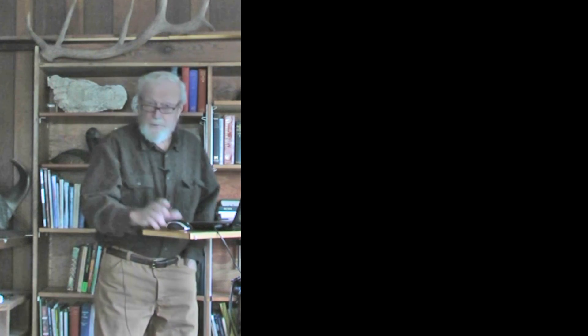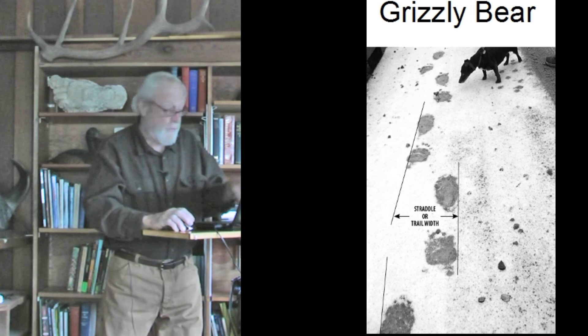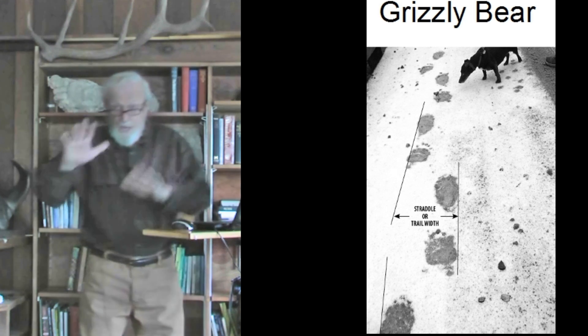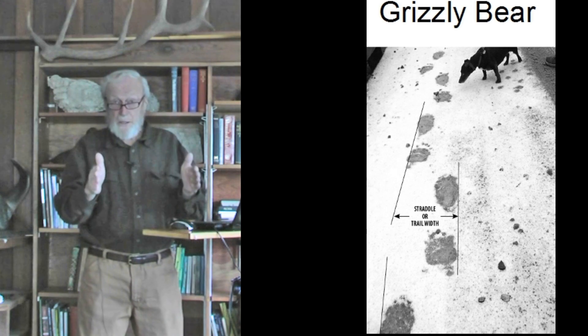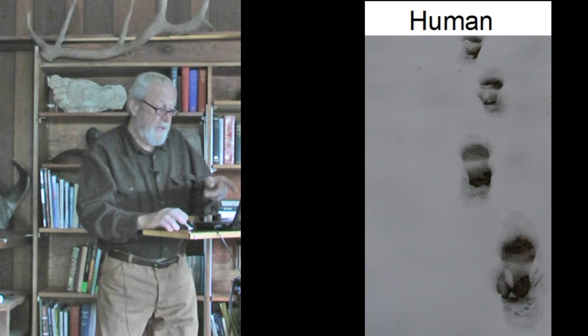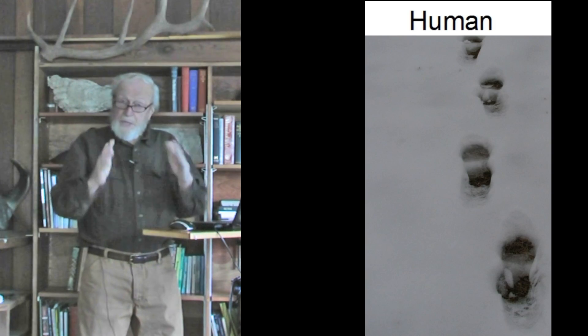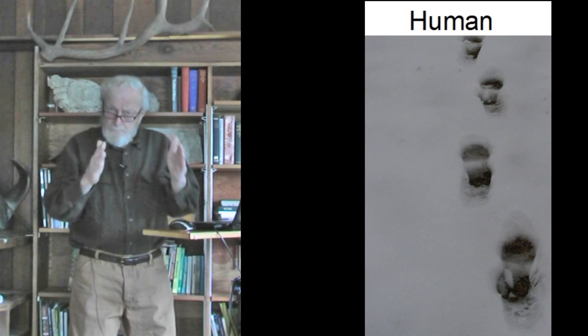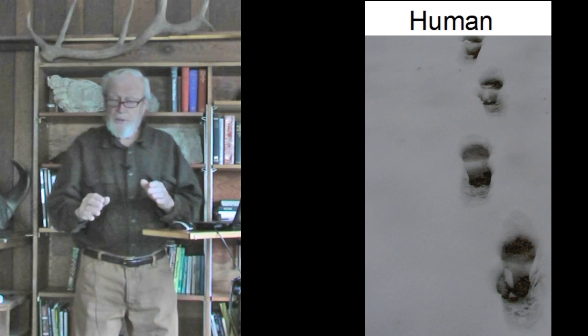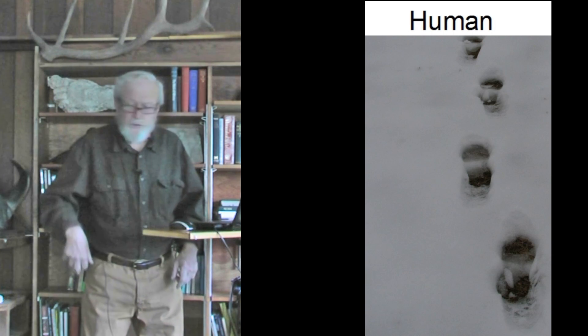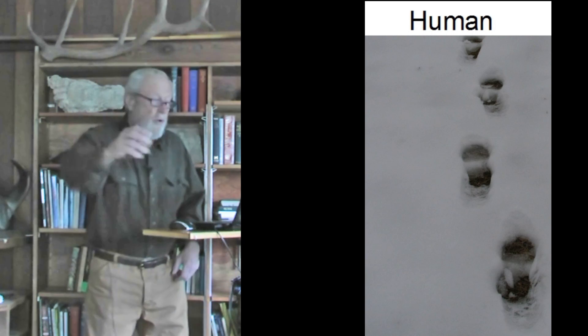Now, anyone interested in tracks and tracking knows that we can't just rely on individual tracks, but that the pattern of the tracks — the trackway, or, in the technical term, the trail — shows us a great deal about the animal. For example, here is a trail of grizzly bear tracks on a road. There's both hindfoot and forefoot, and there is this straddle or width to the trail. And here's a human trail in snow. We humans, when we walk, also show a certain amount of straddle or trail width, and when the snow is a little bit deep, we tend to do this scuffing, where our heel slides in and our toe drags out.